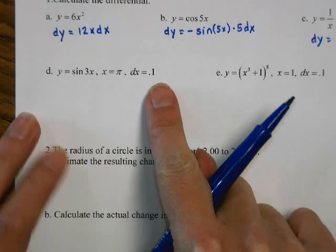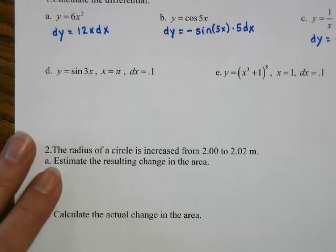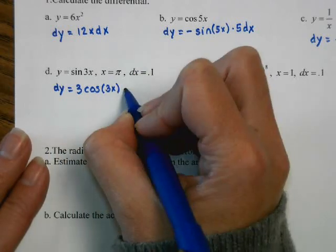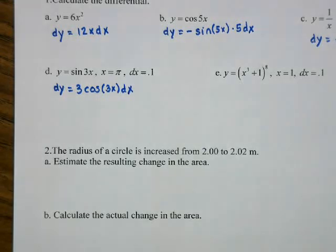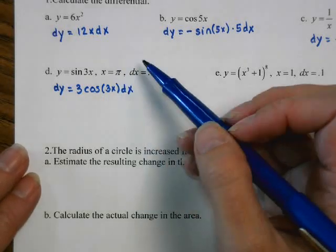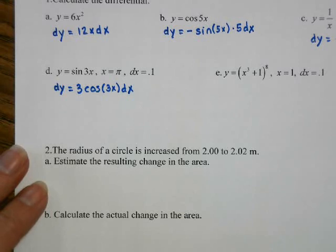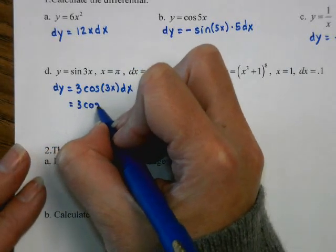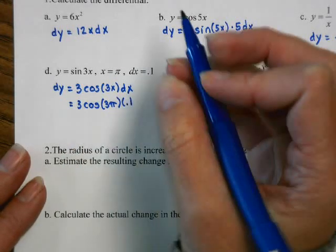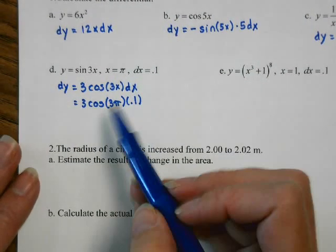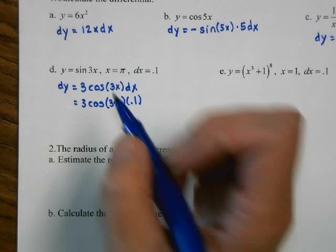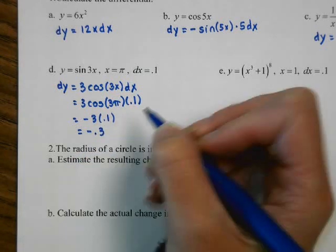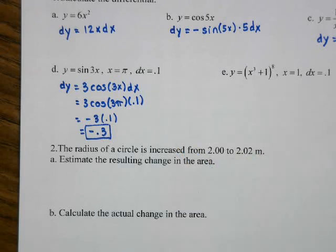If you have more specific information, we're actually finding the change. Here dy equals 3 cosine(3x) dx. We're looking at the change at x equals pi with a change in x of 0.1, so we're really looking at pi plus 0.1. This gives 3 cosine(3pi) times 0.1. Cosine of 3pi is negative 1, so we get negative 3 times 0.1 which is negative 0.3 — that's the approximate change.